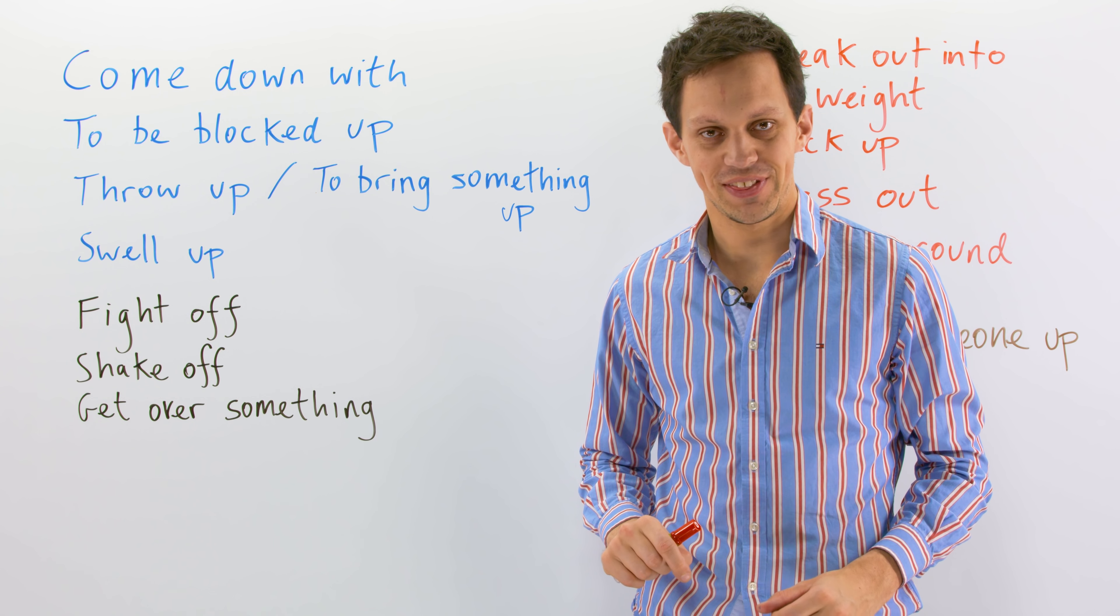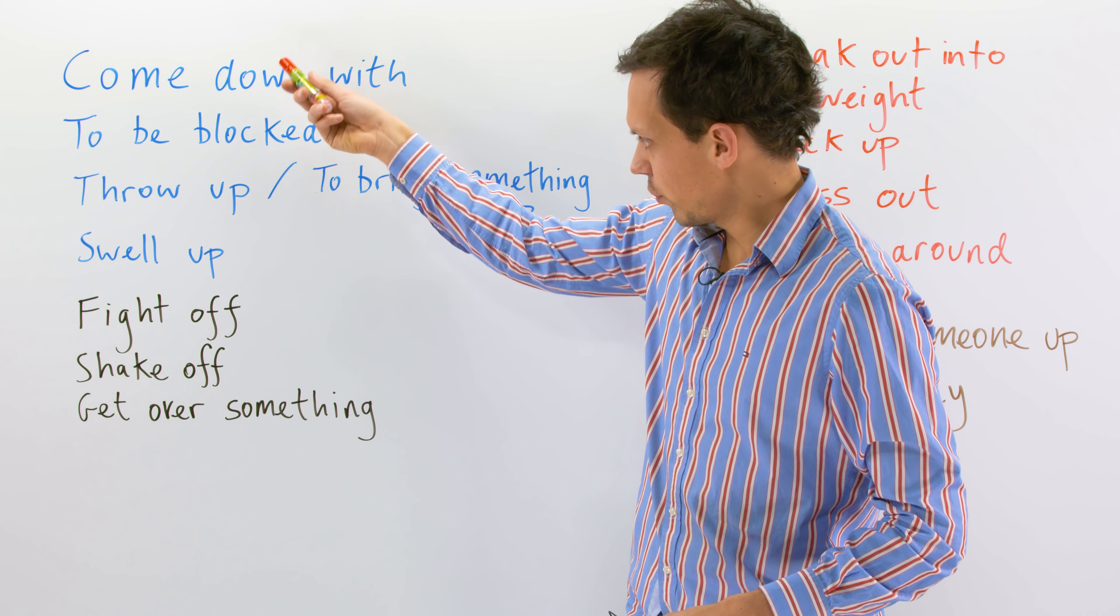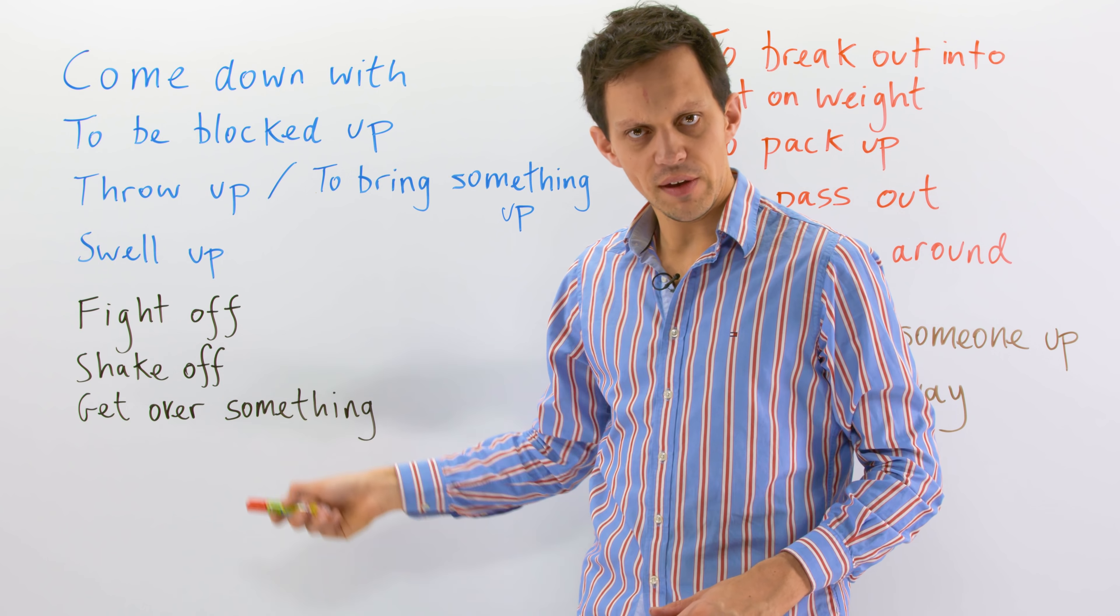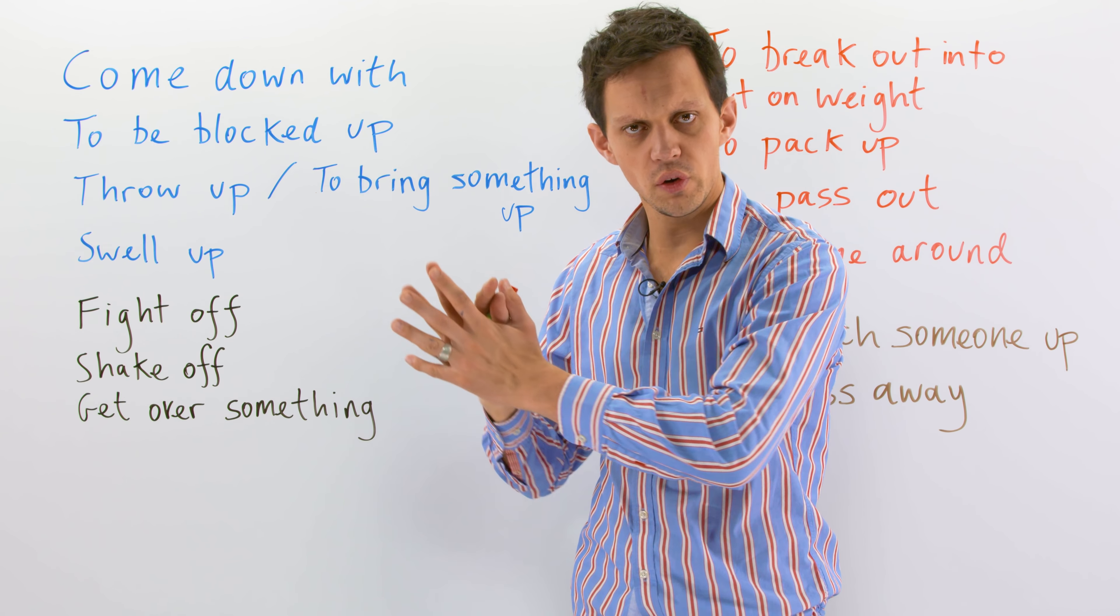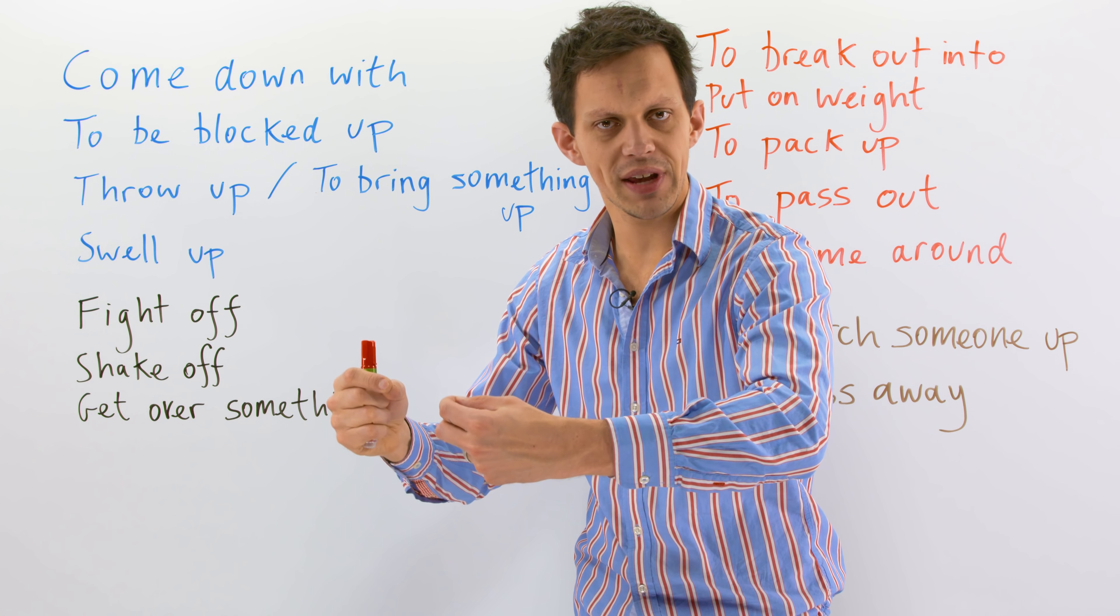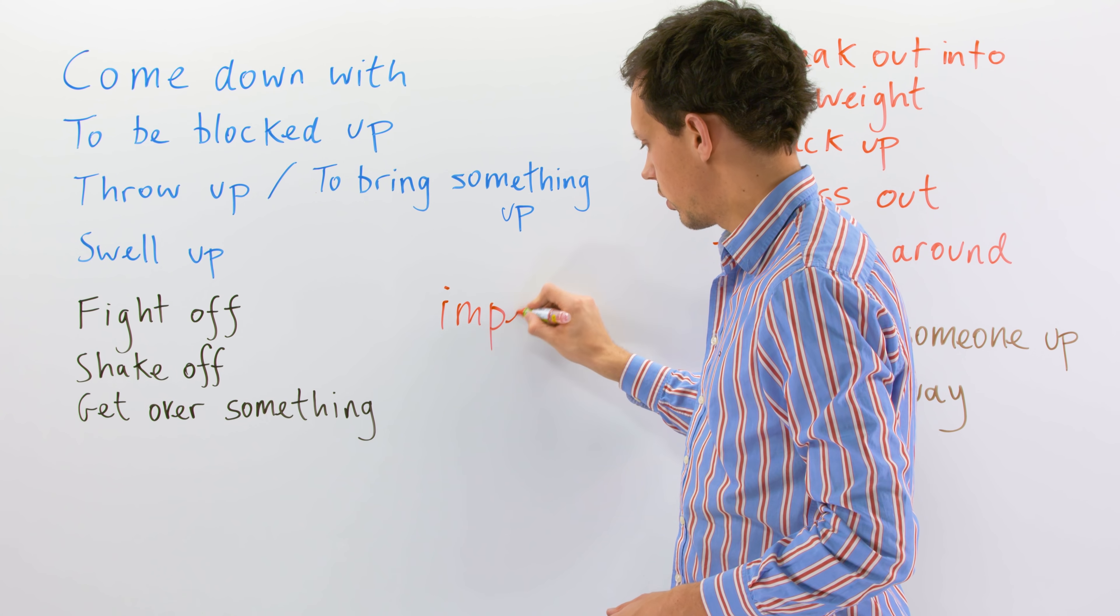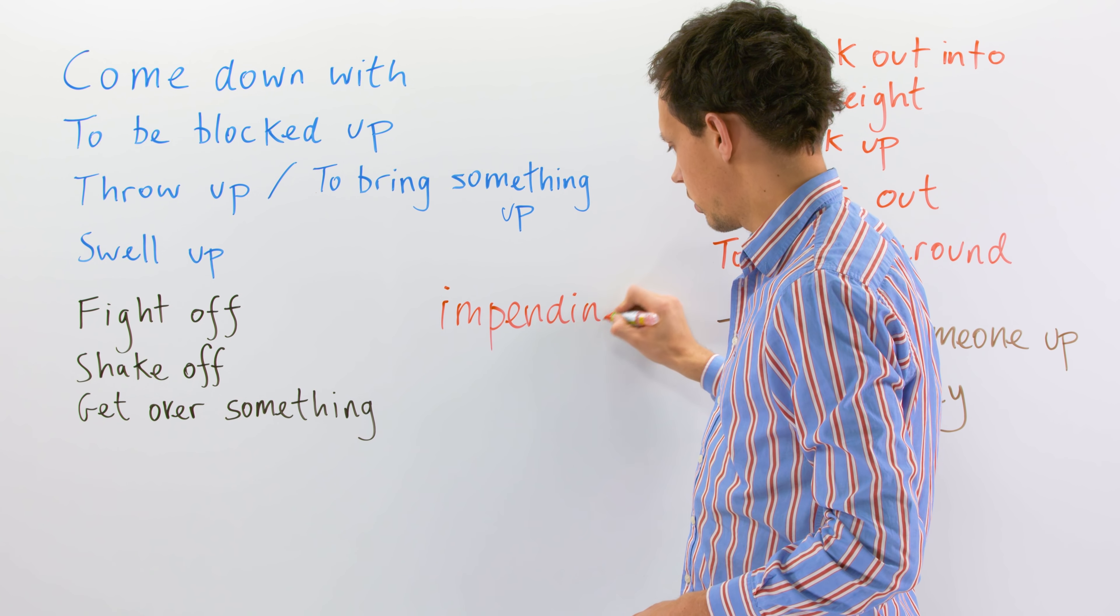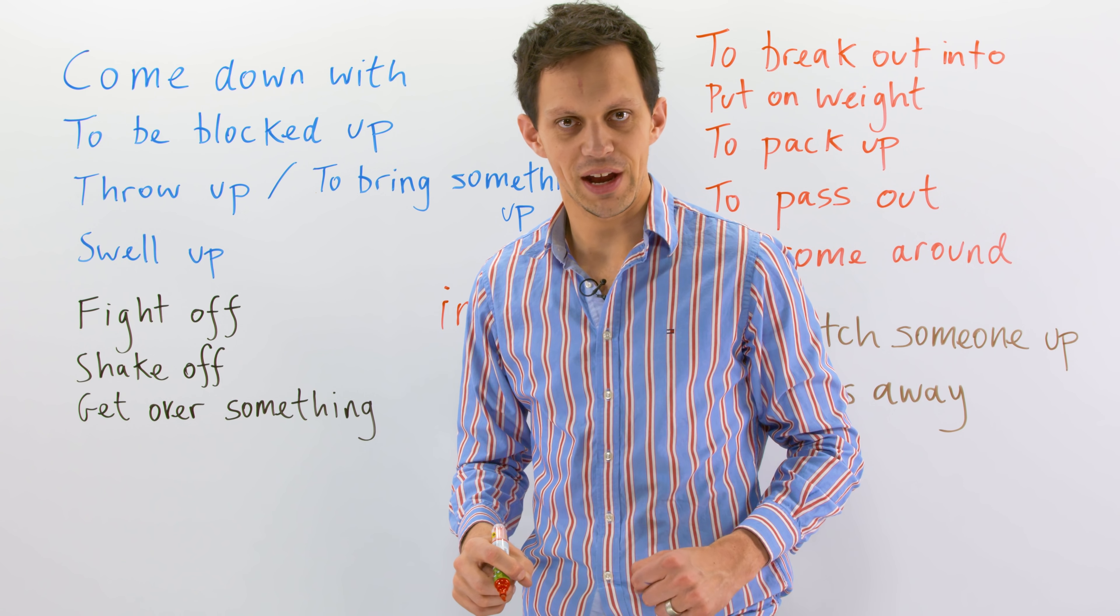You made it back to the second part of the lesson. So, we have one, two, three, four, five, six, seven phrasal verbs here and a few more over there. I'm going to be putting this into the context of my impending, that means about to happen, impending. I'll write that down for you. My impending trip to India. I'm going there on Saturday.